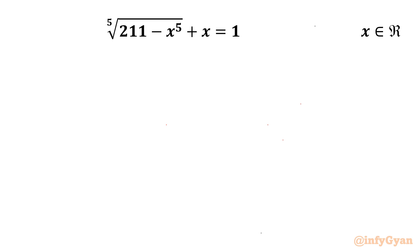Welcome back to InfiGam, my dear friends. Today in this video we are going to solve one very interesting radical equation problem. It is: 5th root of (211 minus x)^5 plus x equals 1. We have to find out all real solutions.